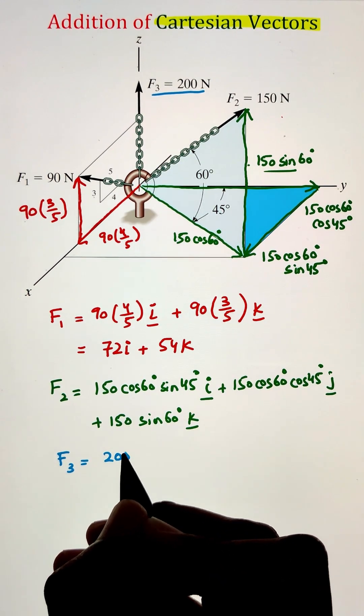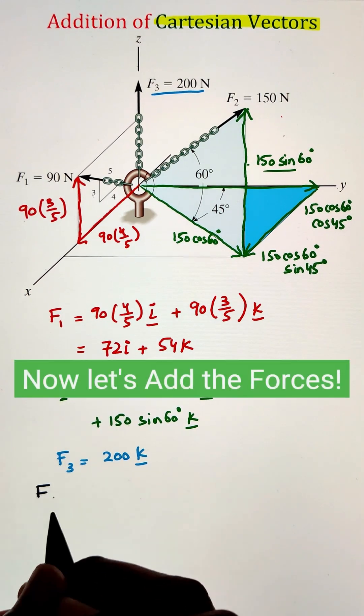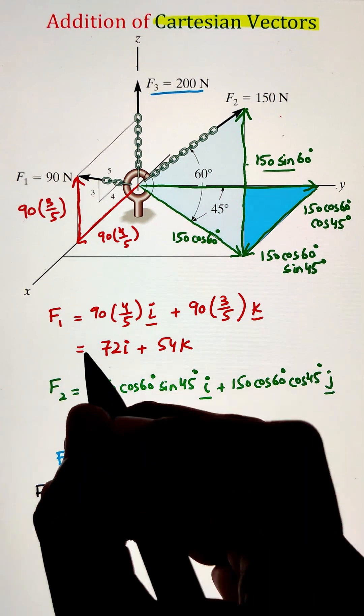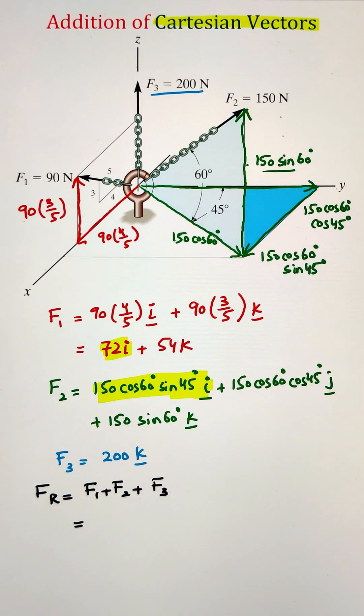Now, for F3 force, since it is only acting along the Z direction, we have just one component of it, that is 200K representing the direction along the Z axis.